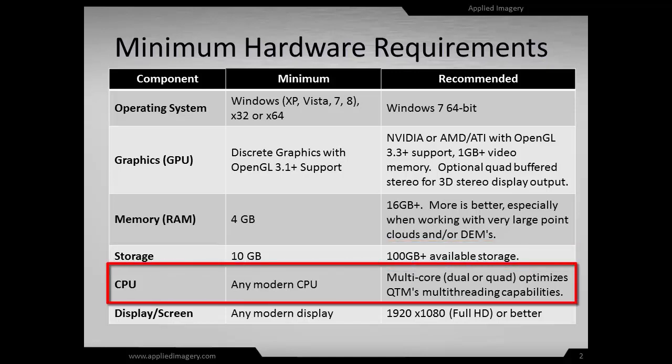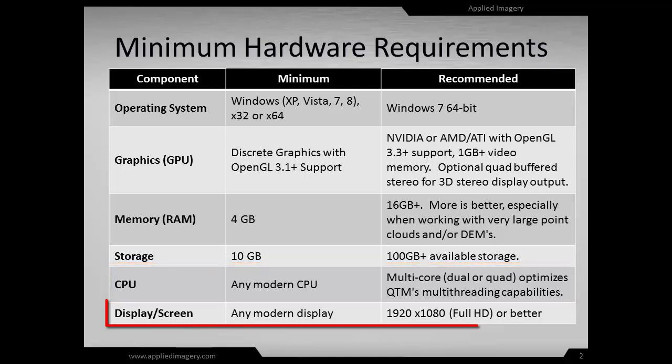Fifth is CPU. Any modern CPU will suffice, but multi-core, fast processors will speed processor-intensive tasks and take advantage of the multi-threaded functions that exist in QtModeler.